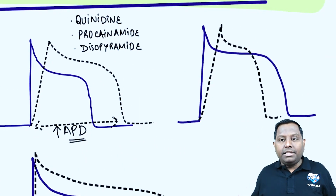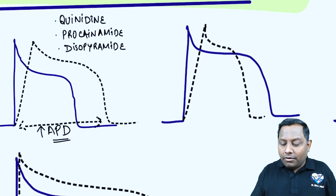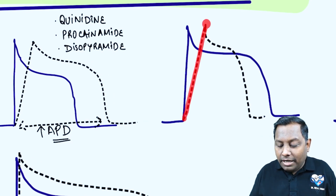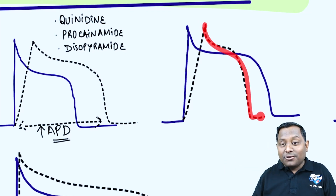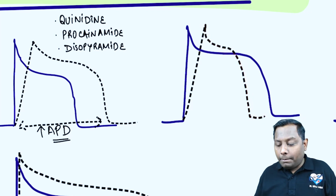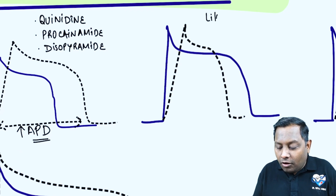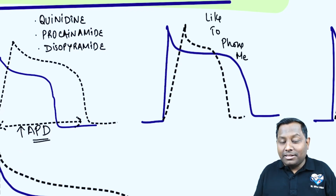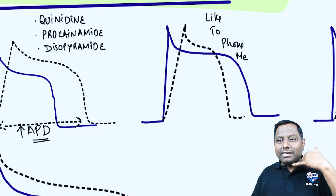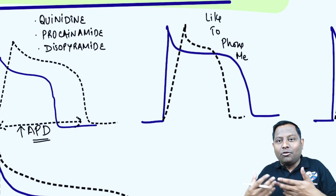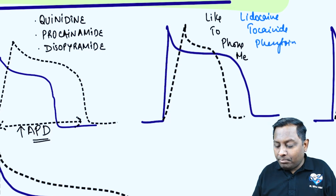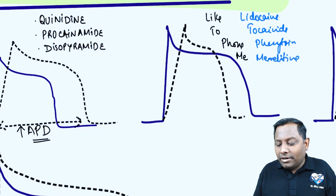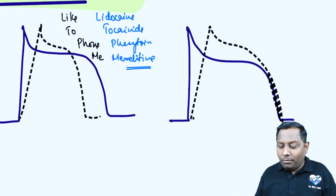Class 1b is the brave group. They have sodium channel blocking property causing decreased slope of depolarization, but also potassium channel opening causing rapid potassium efflux, leading to a decrease in action potential duration. They always brag that everyone calls them in emergencies — whenever there is ventricular arrhythmia we reach for Class 1b drugs: Lidocaine, Phenytoin, and Mexiletine.